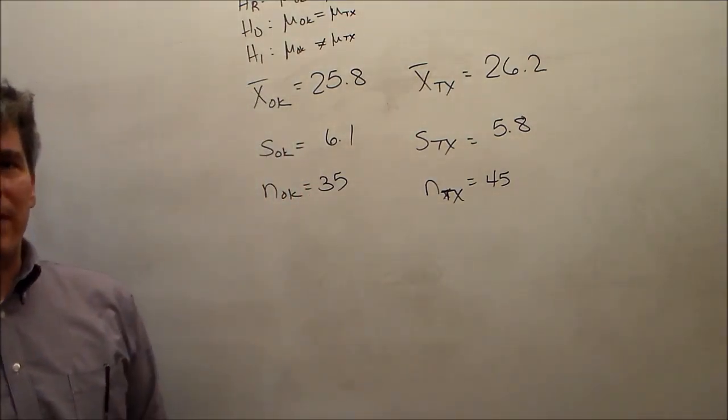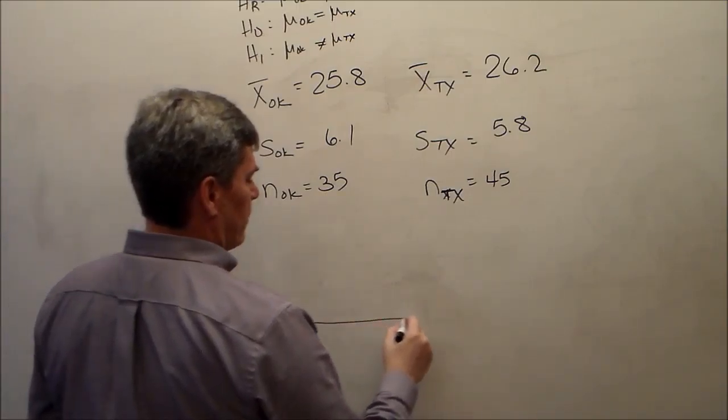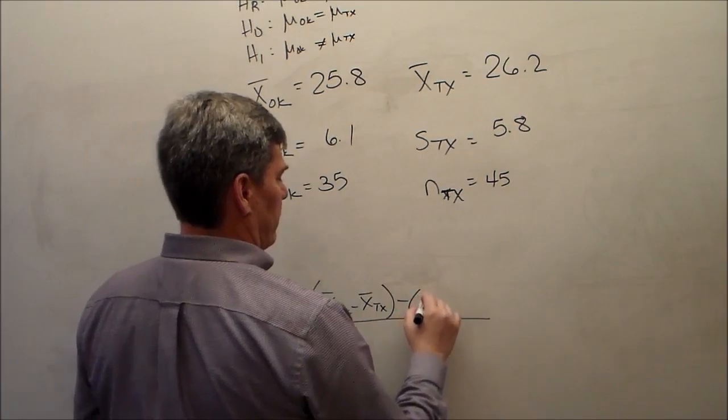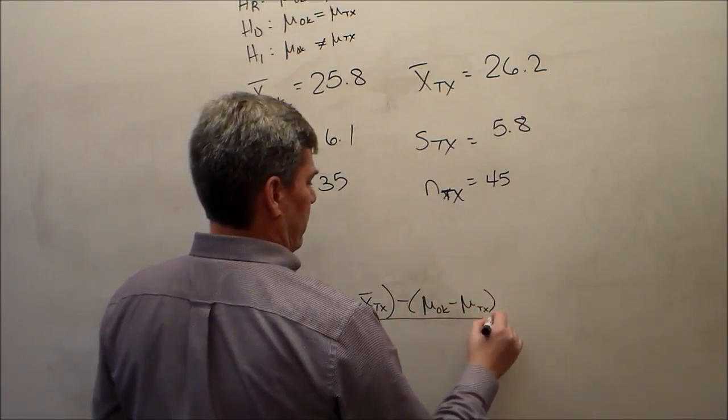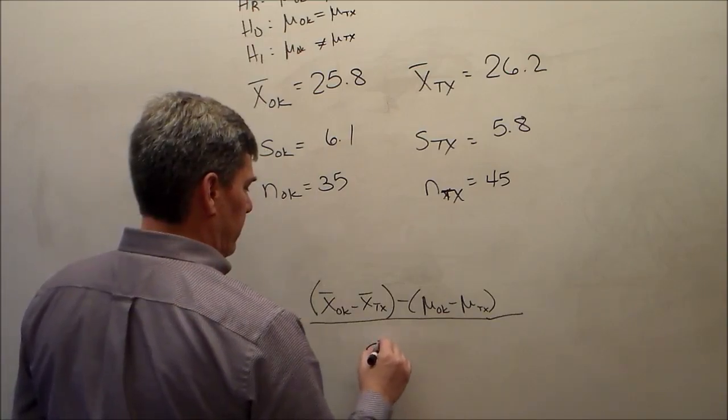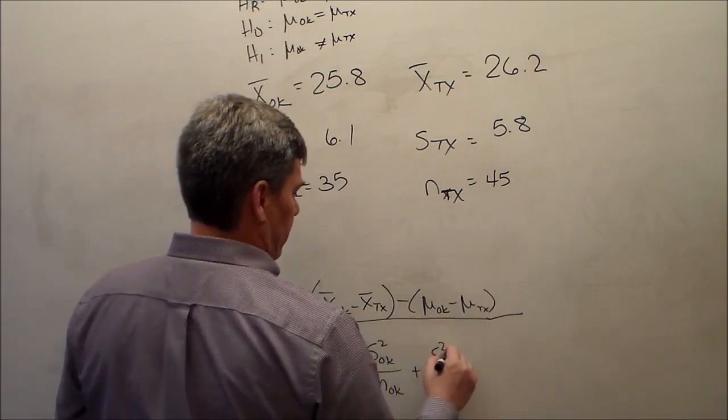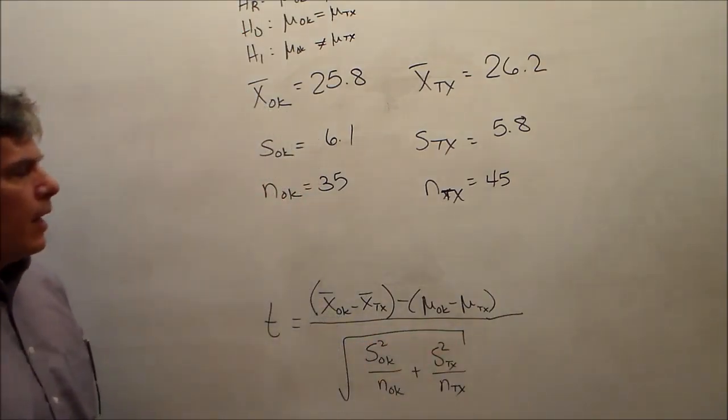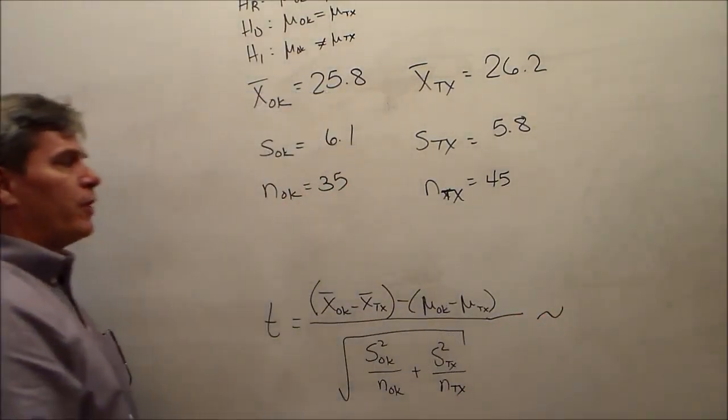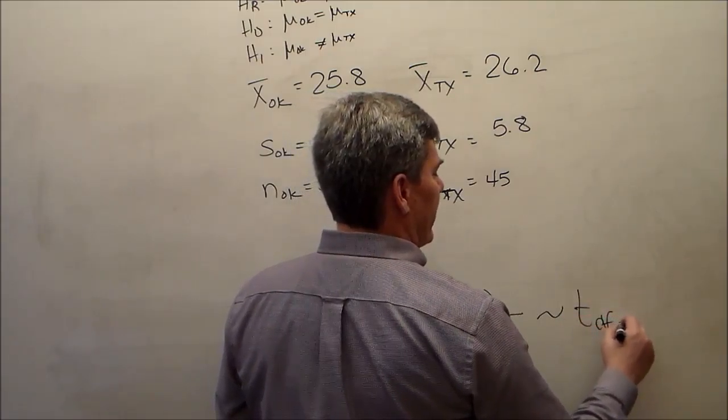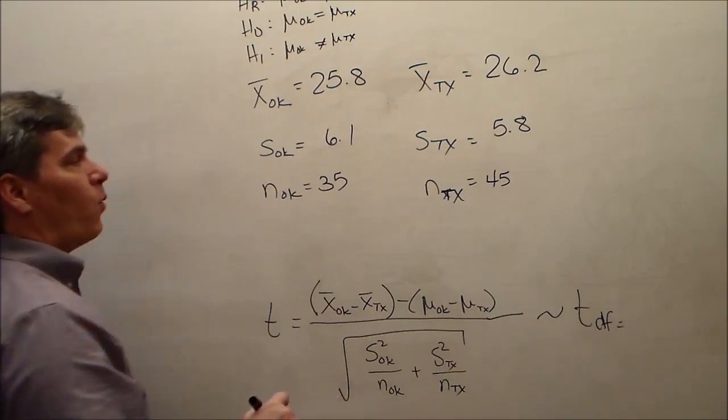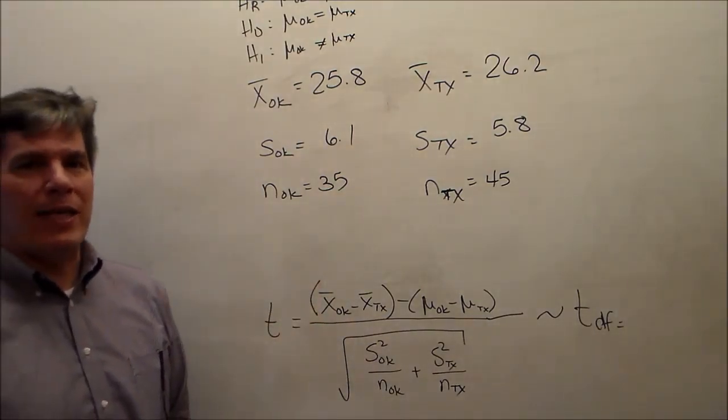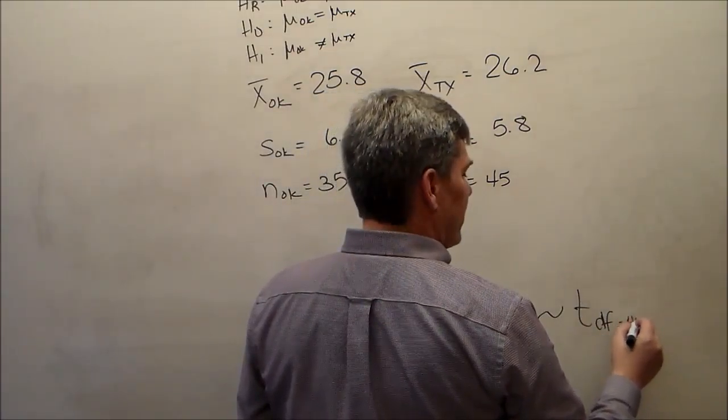In part A, we're supposed to calculate a test statistic and get a p-value. Here's the formula. According to the book, this is going to be distributed according to a t-distribution with degrees of freedom equaling to the minimum of Texas minus 1 or Oklahoma minus 1. Well, sample size in Oklahoma is less than the sample size in Texas, so according to the book, degrees of freedom will be 34.